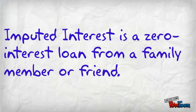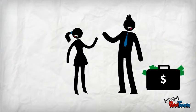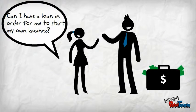Imputed Interest is a zero interest loan from a family member or friend. When it comes to Imputed Interest, you first have to go to a family member or friend and ask for a loan.